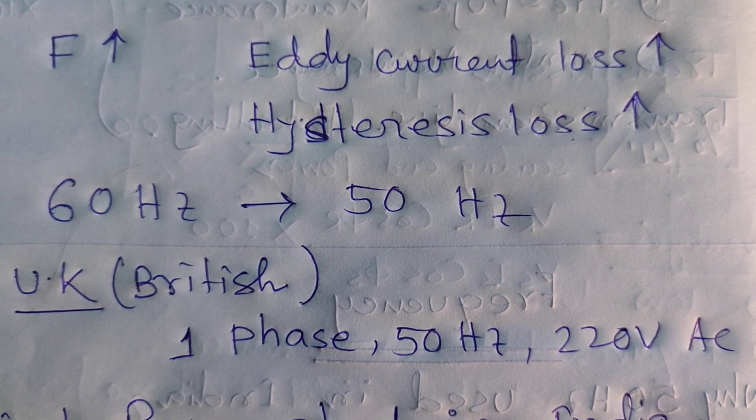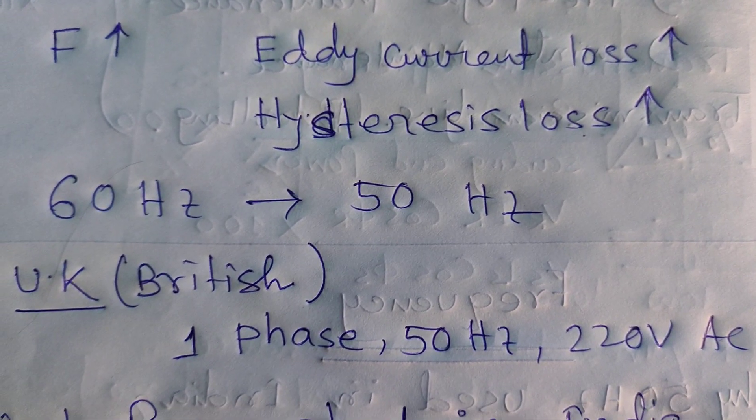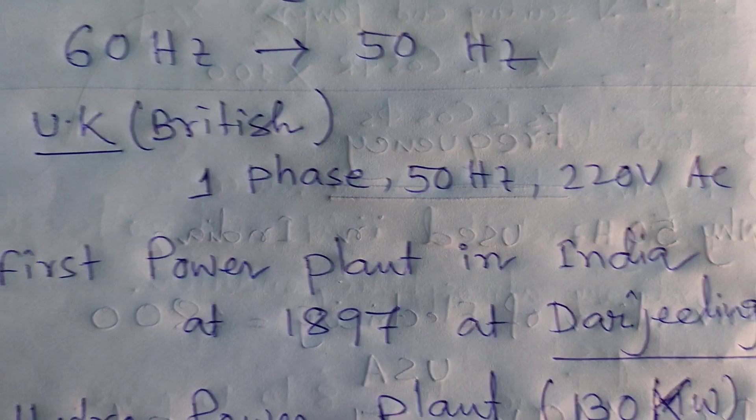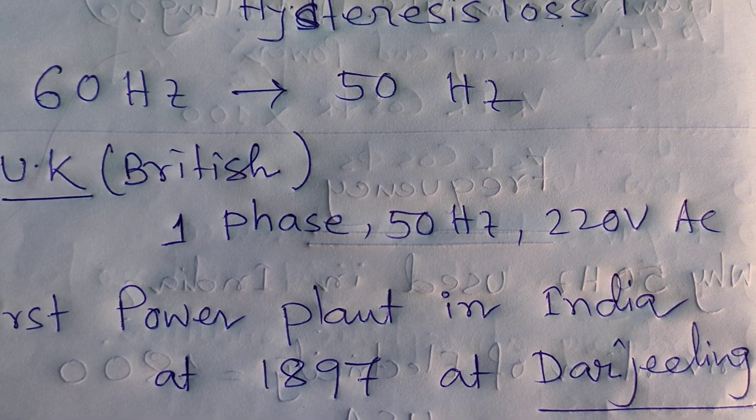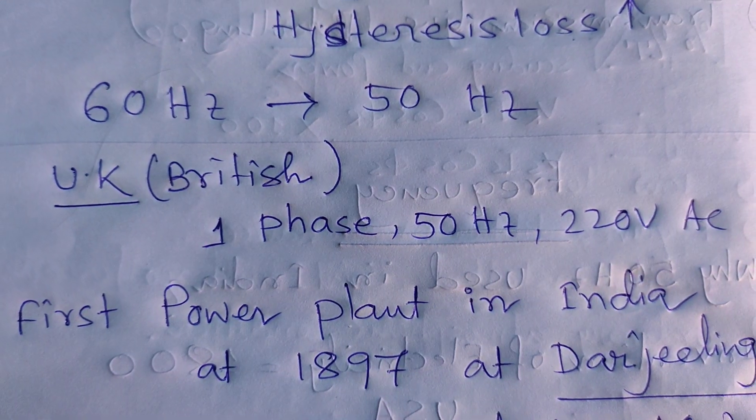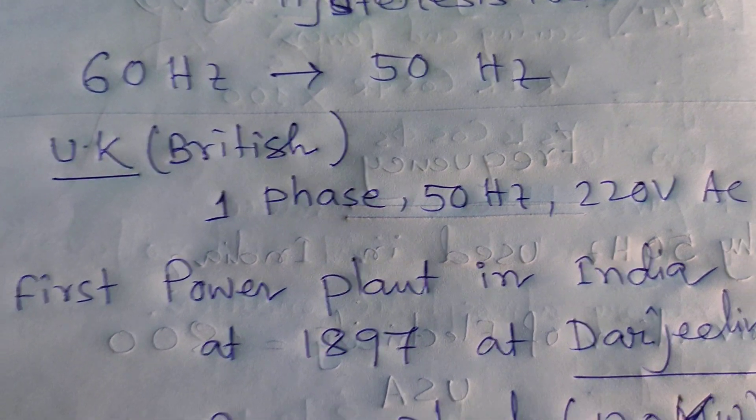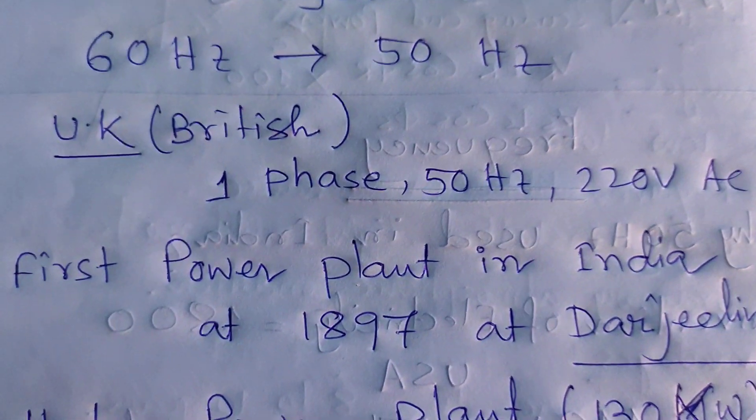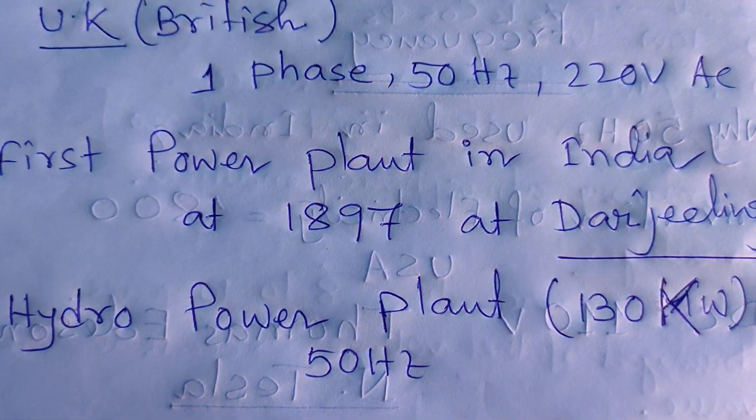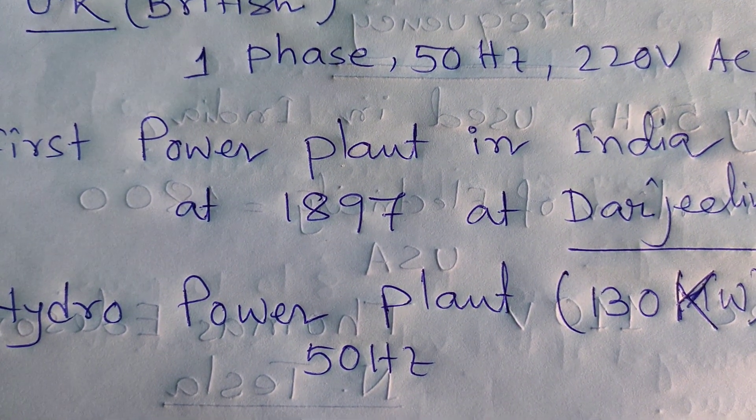As the UK government ruled in India, they first constructed the power plant in India in 1897 at Darjeeling.